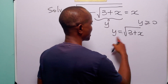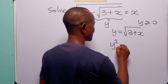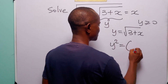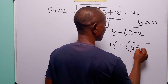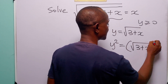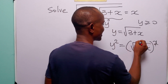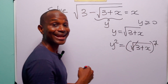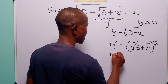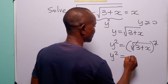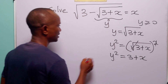Now when we square both sides of this equation, we have that y squared is equal to the square root of 3 plus x, squared. The square is going to take care of the square root, leaving us with y squared equal to 3 plus x.